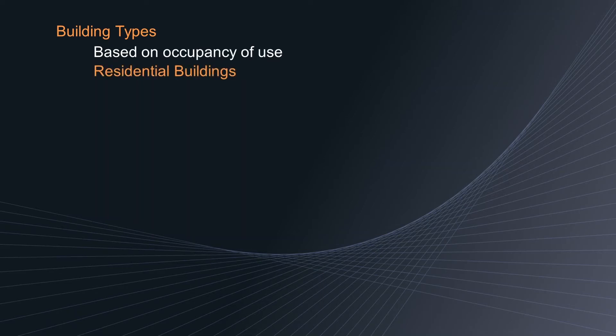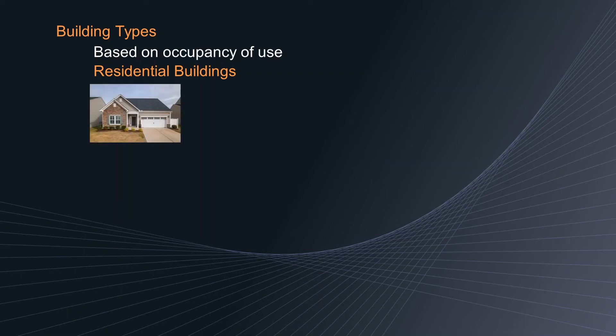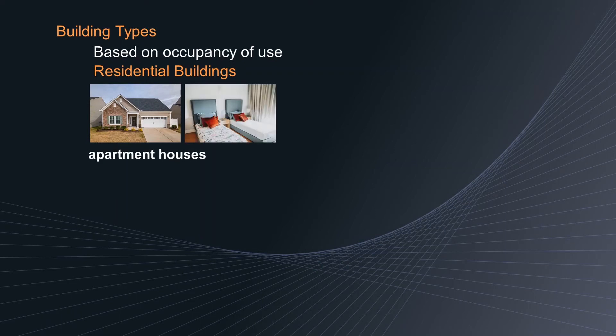First, residential buildings. As those buildings are made for dwellers or residents, these buildings include private dwellings, apartment houses, hotels, dormitories, and so on.